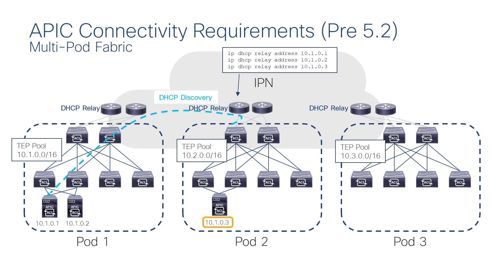The spine in pod 2 is sending DHCP discover packets, which are then relayed to the APIC in pod 1. The APIC can then respond with the DHCP offer packet, configuration files, and allow spines in pod 2 to be discovered. After the spines in pod 2 join the fabric, LLDP is again used within that pod to discover the other leaf and spine switches. Pod 3 does not have an APIC connected — it is not required to have an APIC in a pod for fabric discovery. Pod 3 will also be discovered by using DHCP relay in the IPN network.